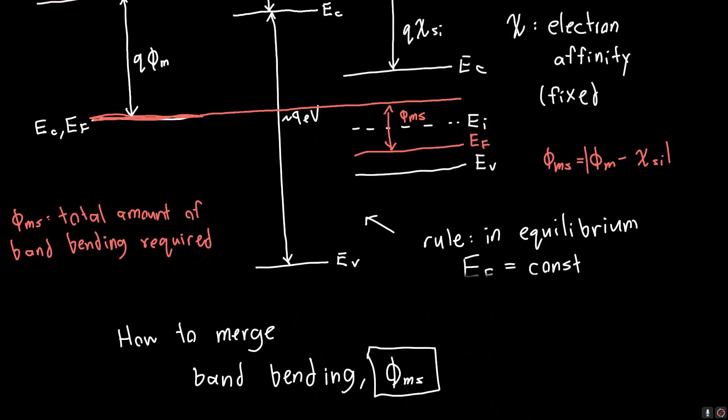So in the semiconductor, our band bending will look like this, it'll bend kind of downwards. In the oxide, it'll just bend linearly like this because there's no charges within the oxide, there's no depletion region formed, it's just a straight up voltage drop across the oxide. So we're going to go over that in the next video. I hope you enjoyed this video and I'll see you next time.